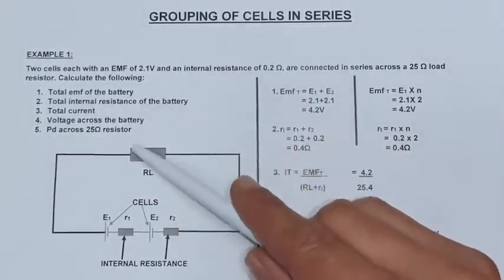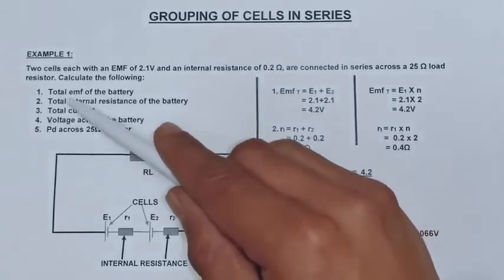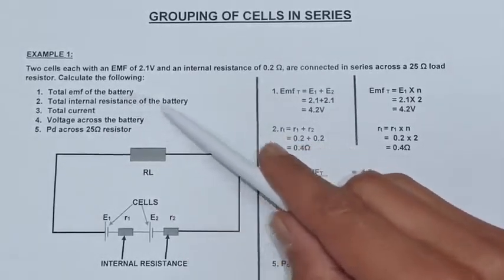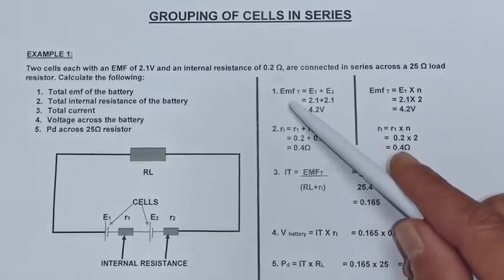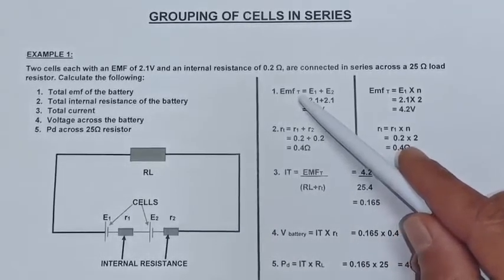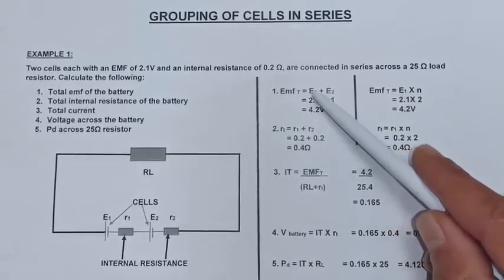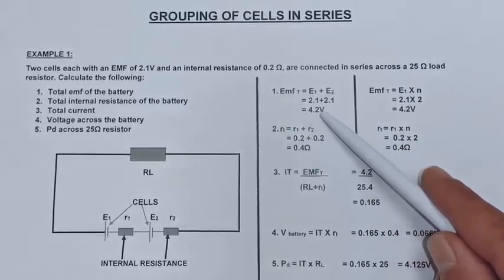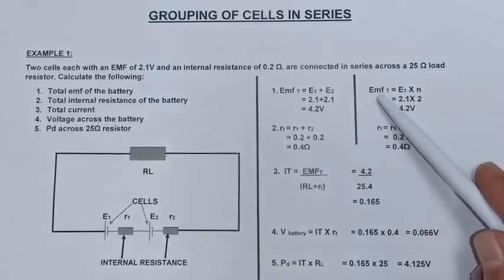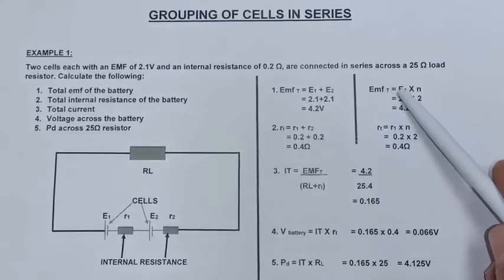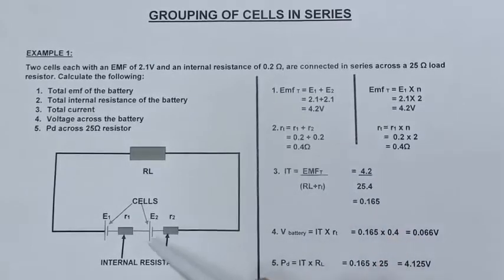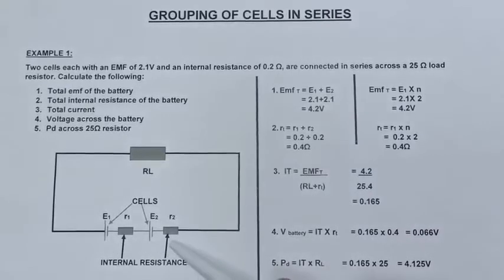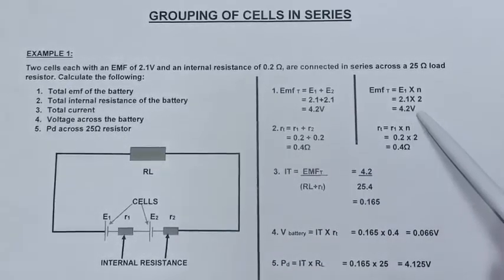Calculate the following. The first thing we are going to calculate is my total EMF of the battery. Because it is a series circuit we use the rules of series where we add: EMF total equals E1 plus E2, which gives me 4.2 volts. I can also calculate the EMF using the formula E1 multiplied by N, where N is the number of cells in series, which is 2, and that also gives me 4.2 volts.